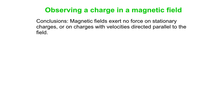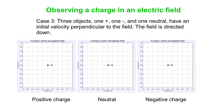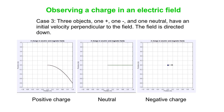So our conclusion is that magnetic fields exert no force on stationary charges, and no force on charges with velocities directed parallel to the field — very different from what we observe in an electric field. In an electric field with three objects: a positive charge follows a parabolic path curving downward, a neutral particle is undeflected, and a negative charge follows a parabolic path curving upward.